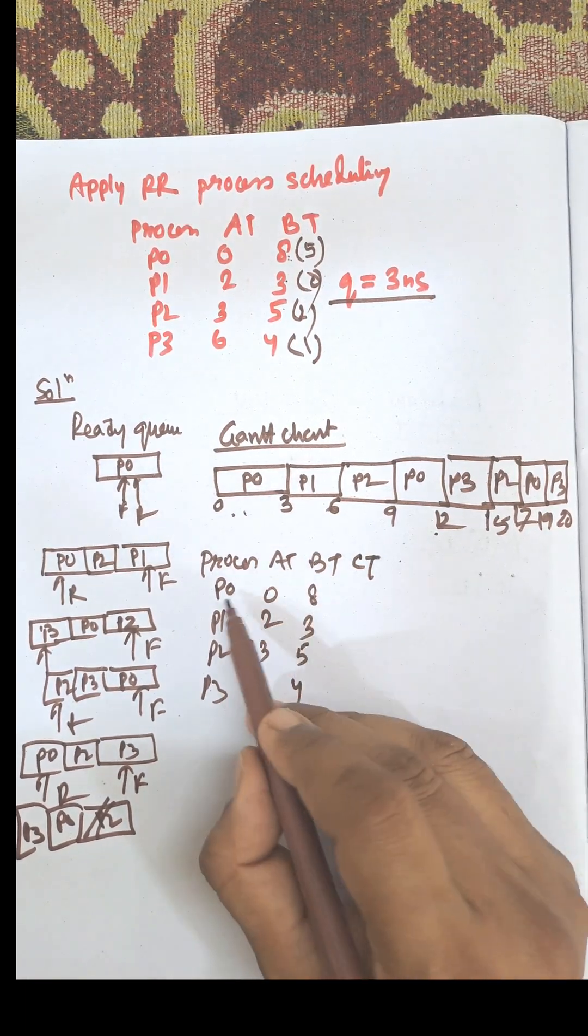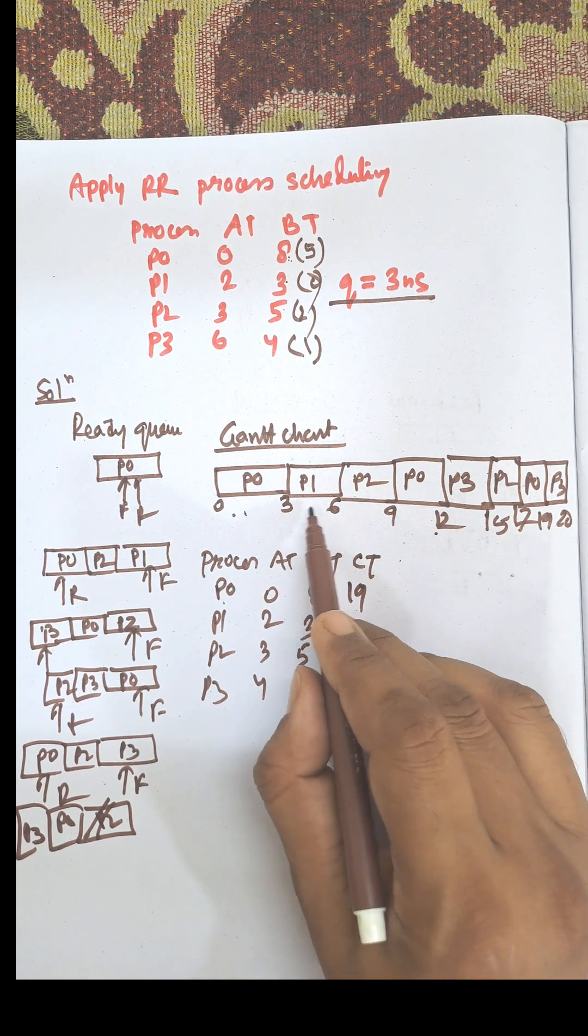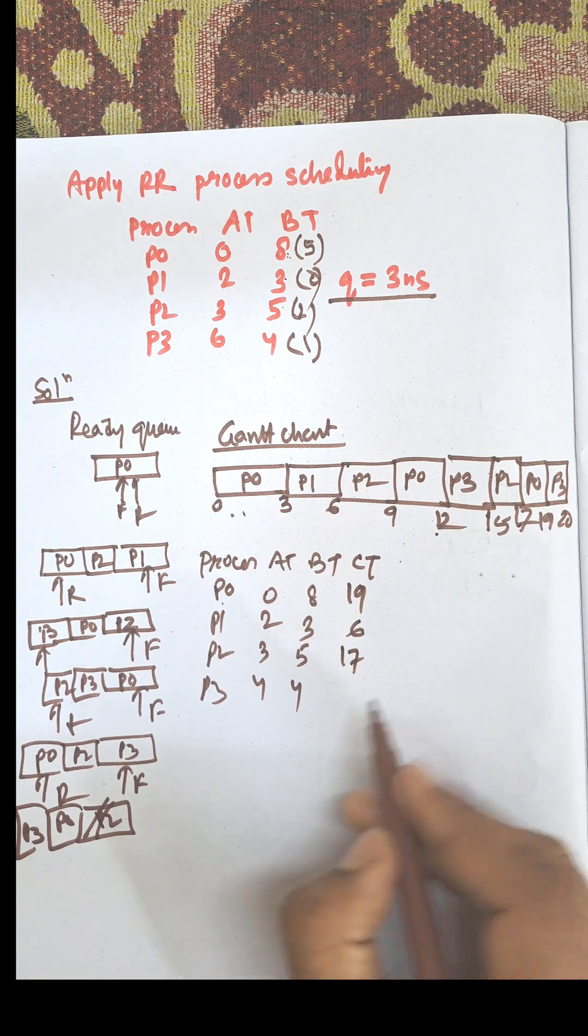Now we need to calculate completion time. Completion time of P0 is 19. Completion time of P1 is 6. Completion time of P2 is 17. Completion time of P3 is 20.